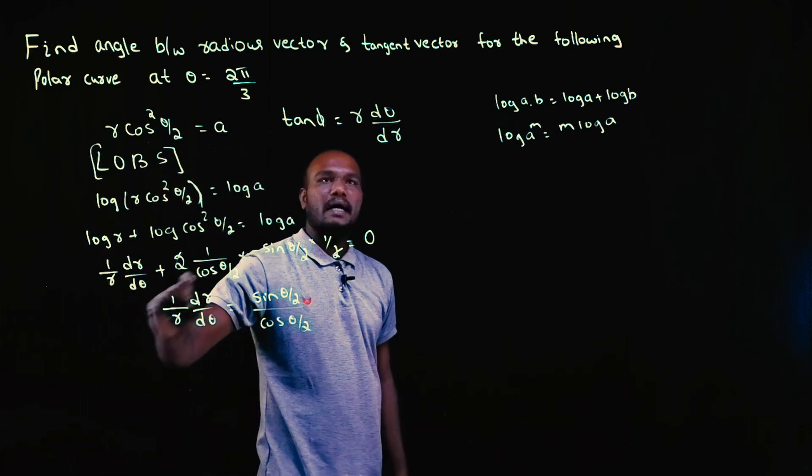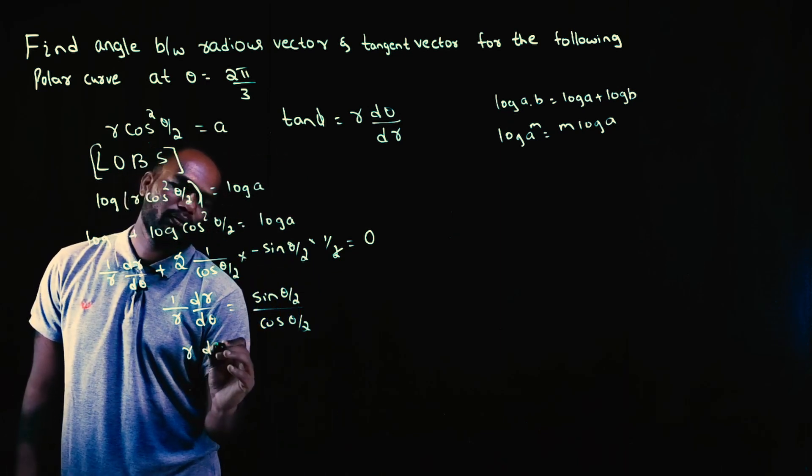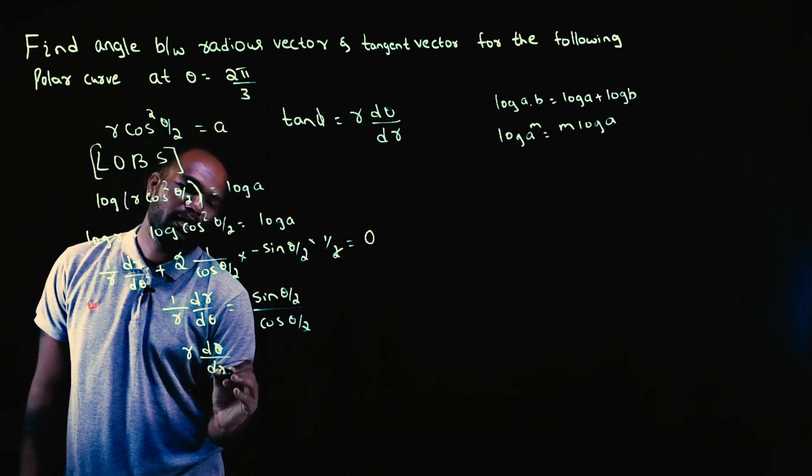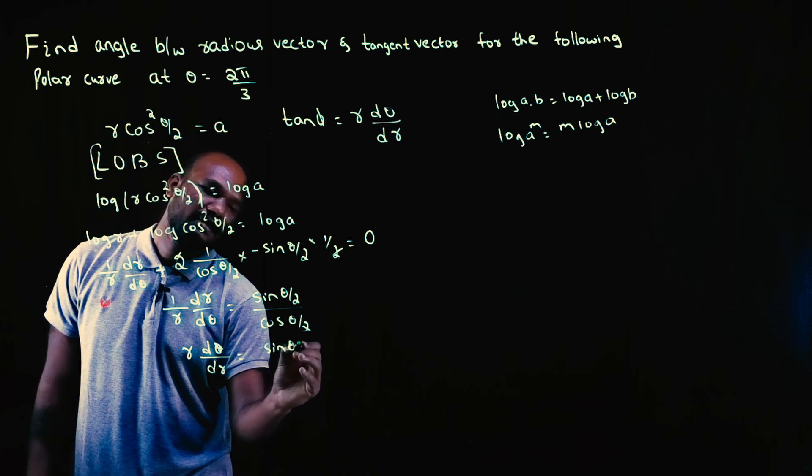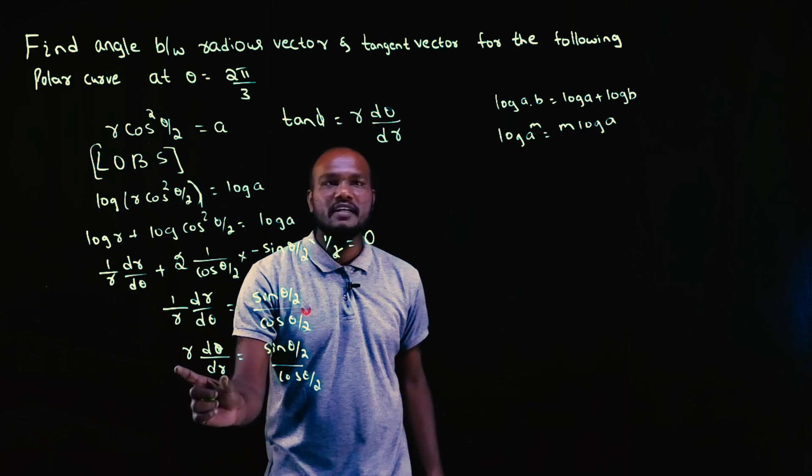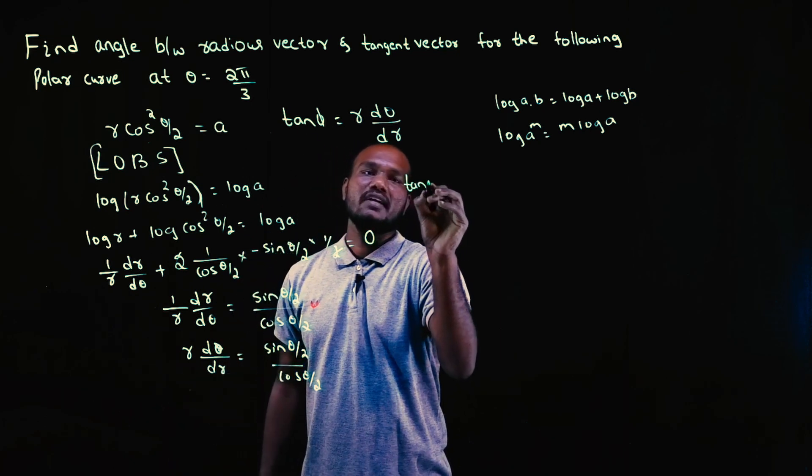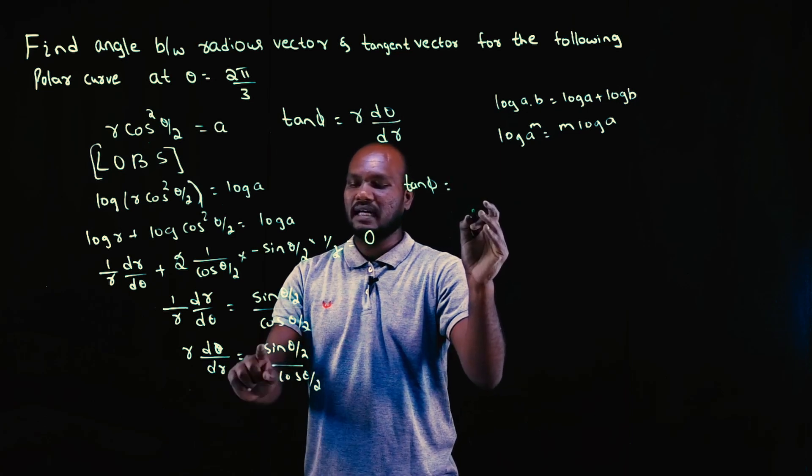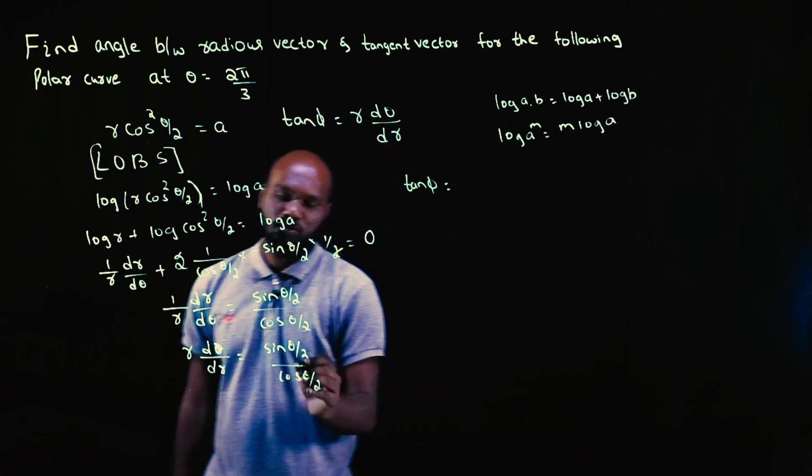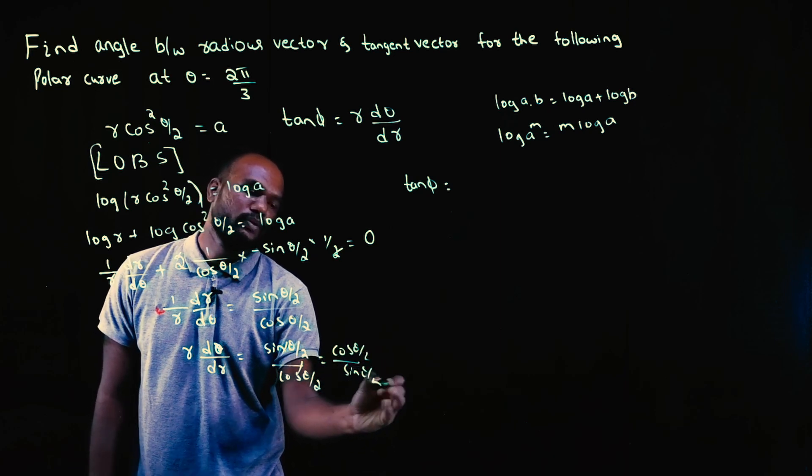So sine theta by 2 over cos theta by 2. I am not interested in 1 by R. I am interested in R. So just replace this. So R into d theta upon dR is equal to sine theta by 2 upon cos theta by 2. If I just look out here, R into d theta by dR value is tan phi. So tan phi value itself is given as, this also should get reversed. So I made a mistake. This also should get reversed. So cos theta by 2 by sin theta by 2, right?